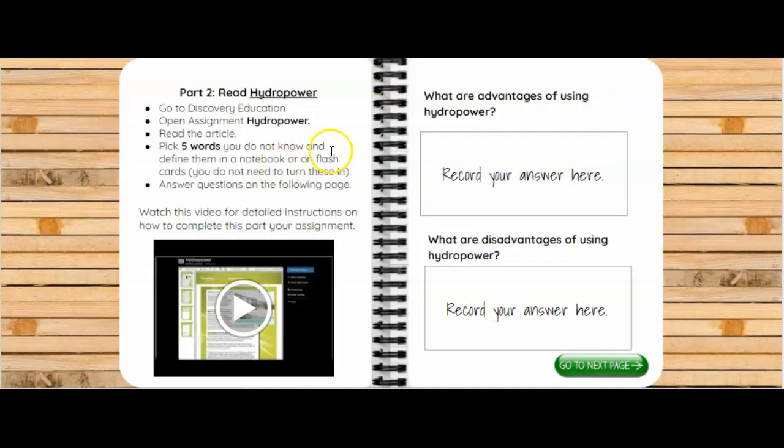And go to this page. This is where you're going to actually read the article we will be using to find textual evidence. So to get to that article, you're going to go to Discovery Ed, and you're going to find the assignment hydropower. It will be listed on your assignments. Then I want you to read the article.